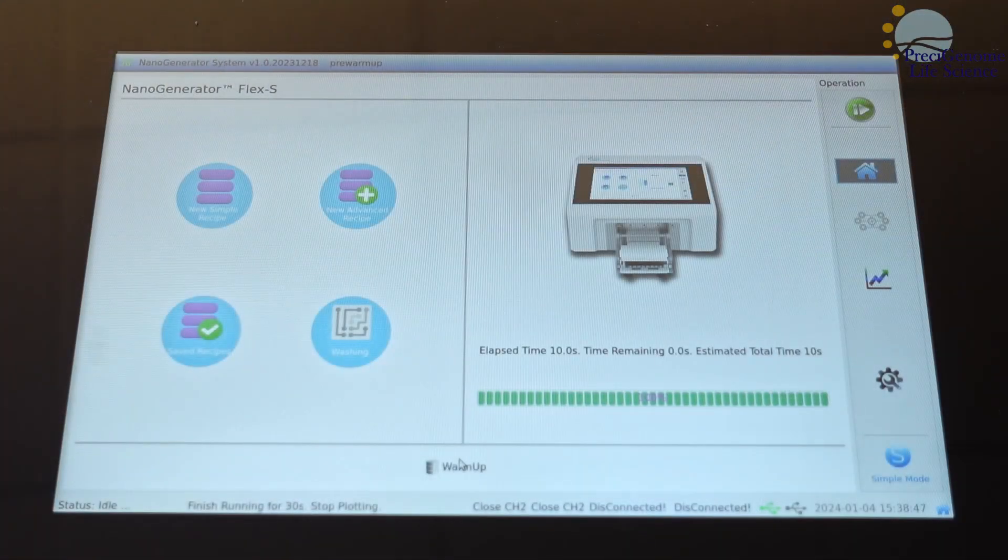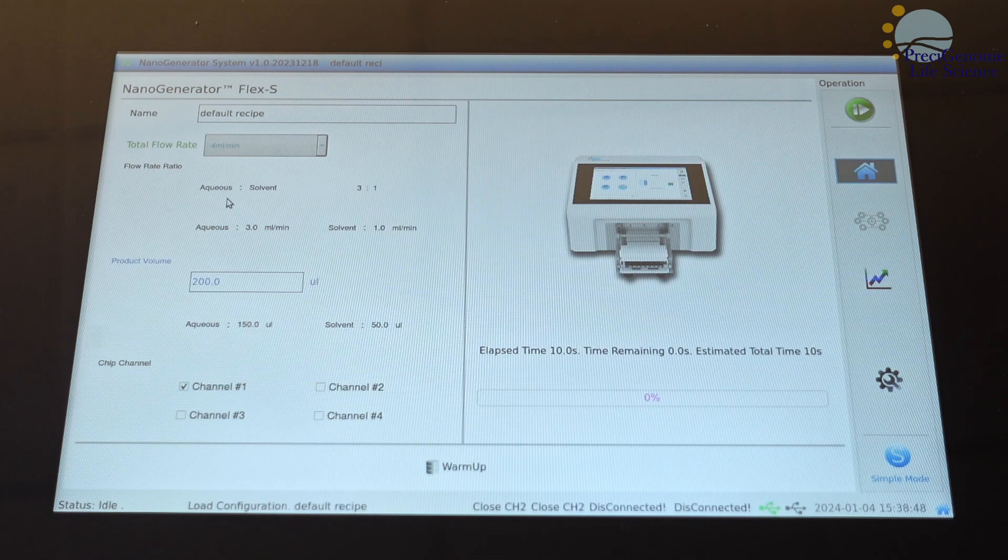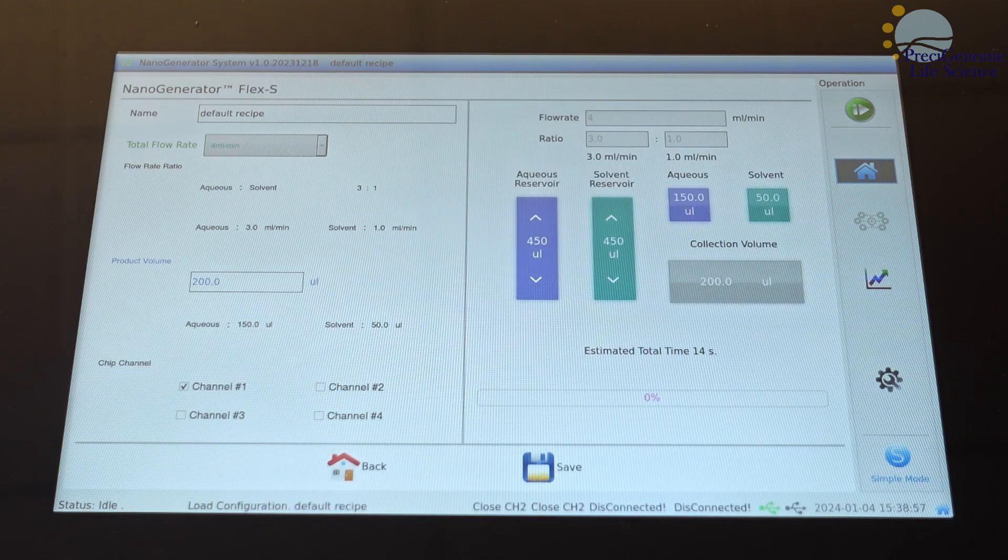On the home page, enter New Simple Recipe. Here you will find several parameters which can be tuned to suit your applications.